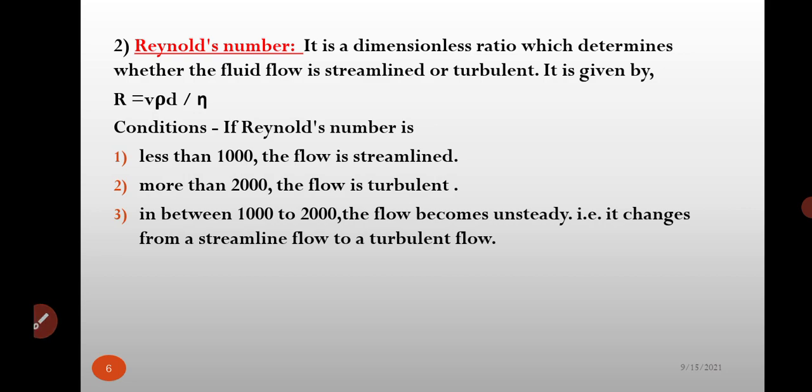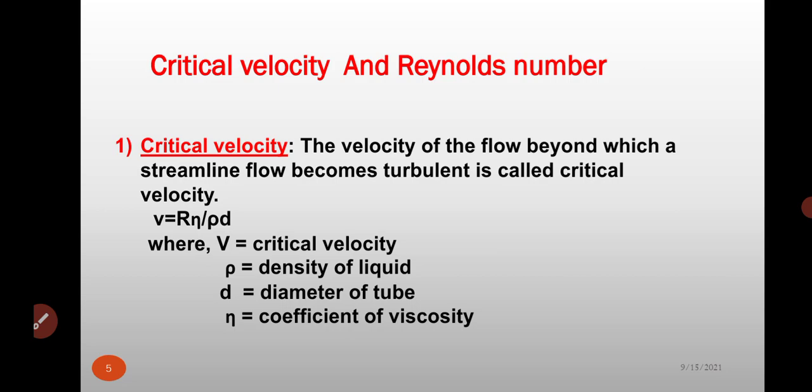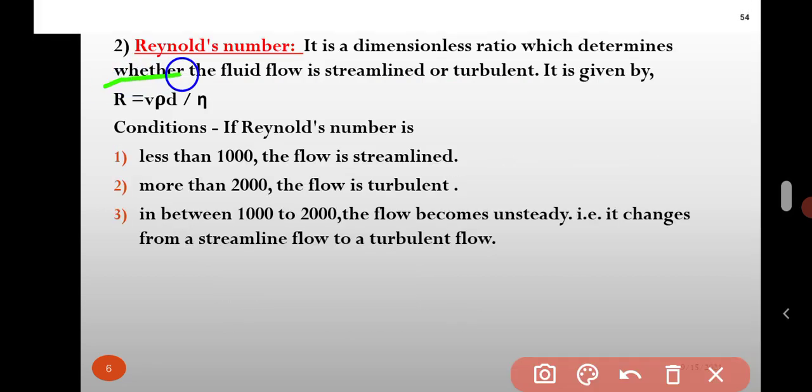Reynolds number. It is a dimensionless ratio which determines whether the fluid flow is streamlined or turbulent and is given by R is equal to V rho d upon eta.